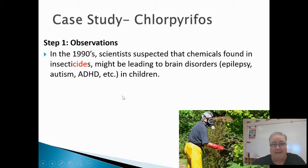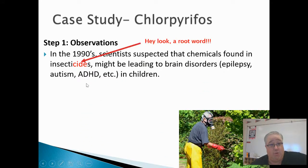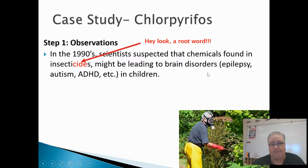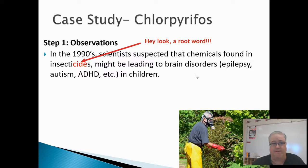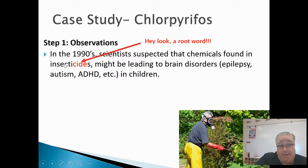In the 1990s, scientists suspected that chemicals found in insecticides — and there's a root word there, 'insect-icide,' meaning to kill insects — might be leading to brain disorders in children. Things like epilepsy, autism, and ADHD. In the 1990s, we saw a huge spike in these disorders, especially in kids, and scientists were looking for reasons why. One suspected link was insecticides, possibly through exposure by a pregnant mother affecting her unborn child.